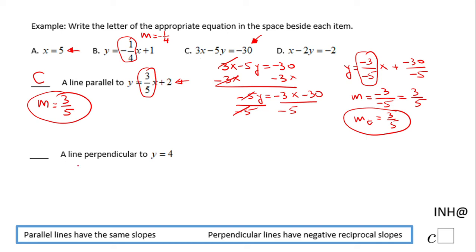Now we can go to the next part: a line perpendicular to y = 4. Here you have to look for a line that's x = something. x = something will be a vertical line, and y = 4 is a horizontal line.